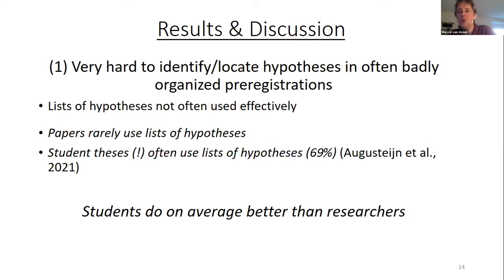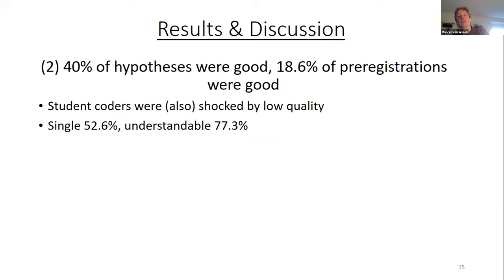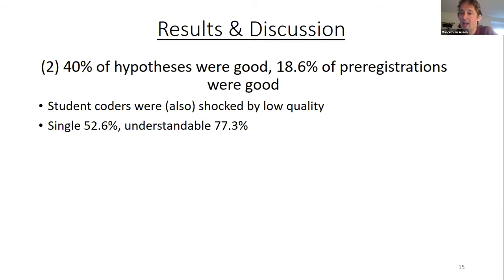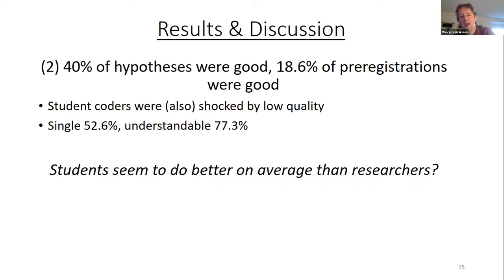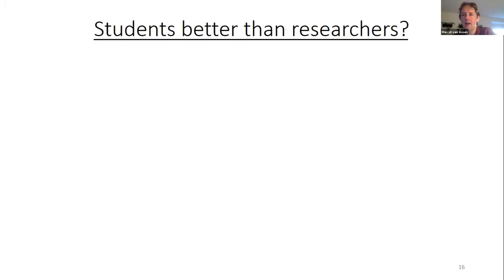If we look at student theses, one of our group members examines student theses and finds that they do contain lists of hypotheses in the majority of cases, which makes it much easier to identify hypotheses. So what we observe here is that students do on average better than researchers. As I said in the main message, only 40% of the hypotheses were good and 18.6% of pre-registrations were good. The students who worked with us were shocked by the low quality.